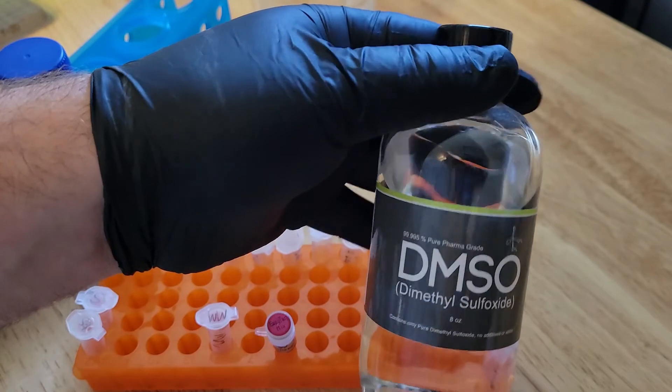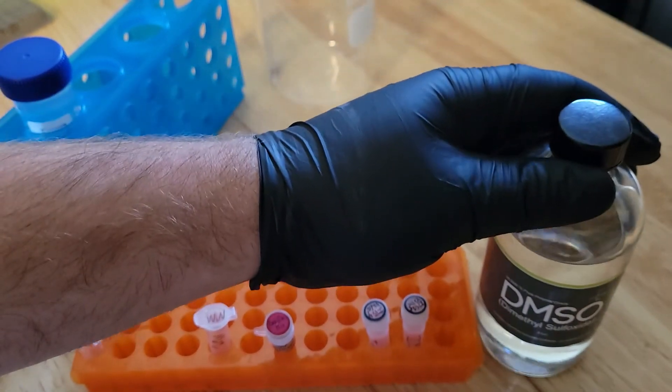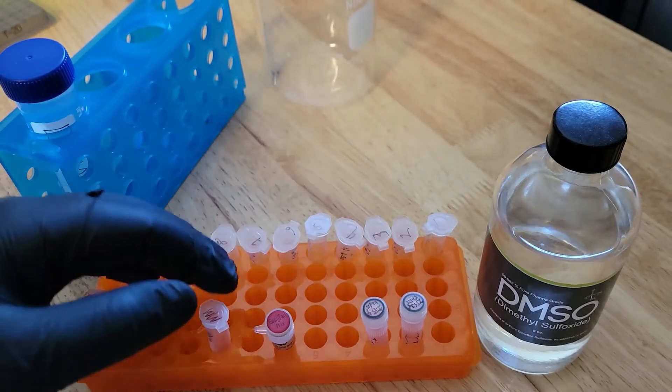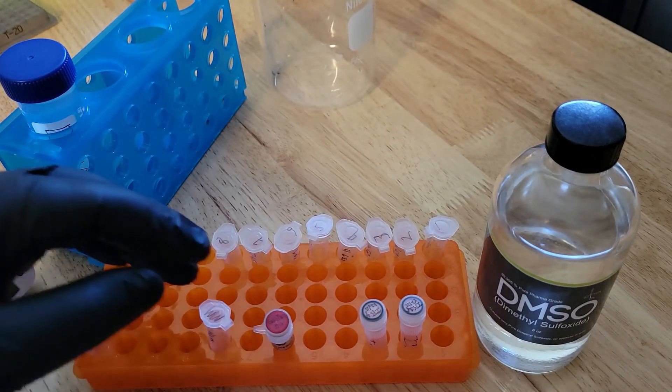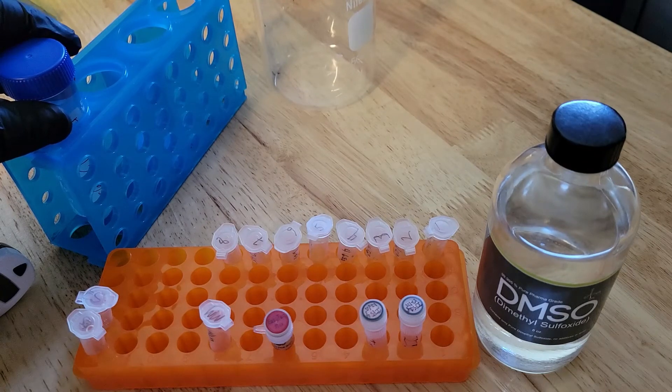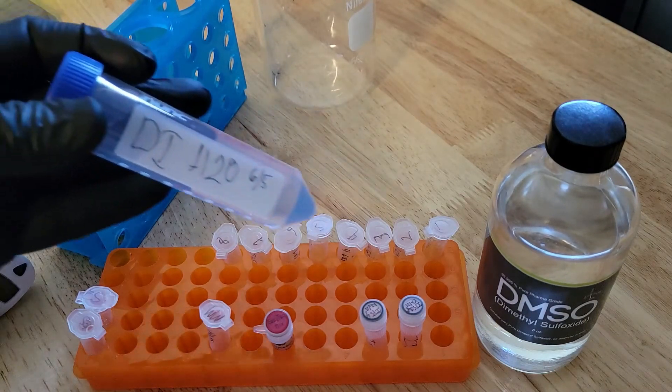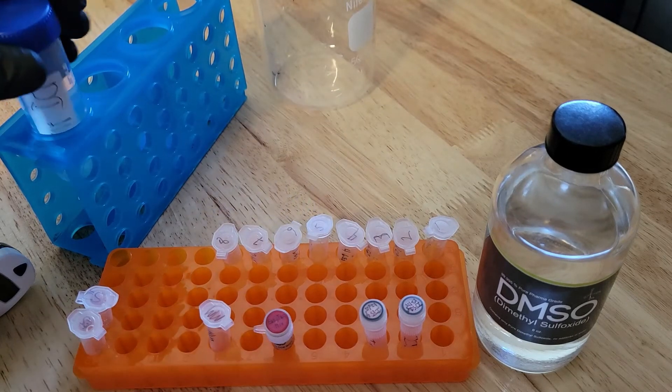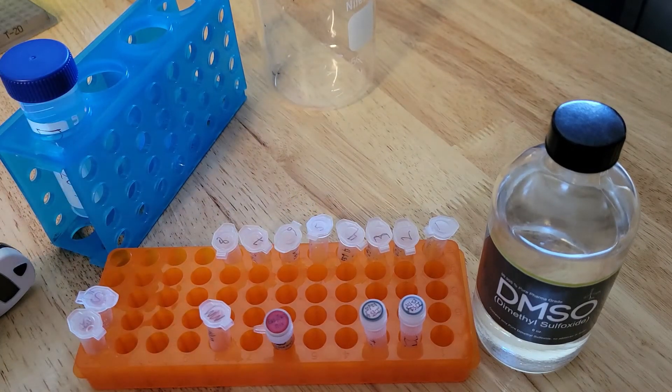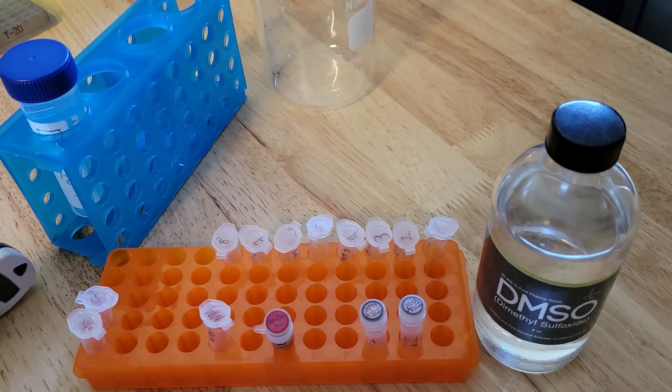ITS1F forward primer. We put very, very small amounts of that in there. A tiny amount. This is dimethyl sulfoxide, DMSO. I put a little bit of that in there. I got that from eBay. It was not hard to come by. That helps with the melting of the primers. Then I've got deionized water. That's just going to round everything out. Those will be the ingredients in the PCR master mix.